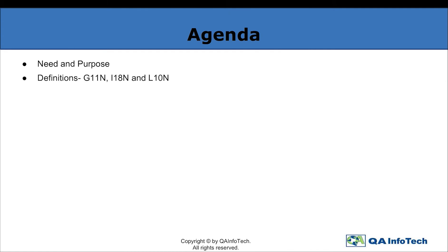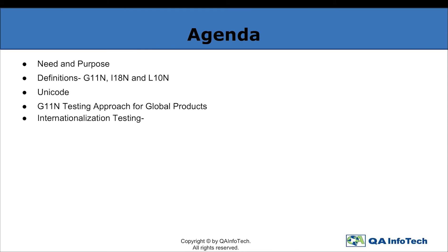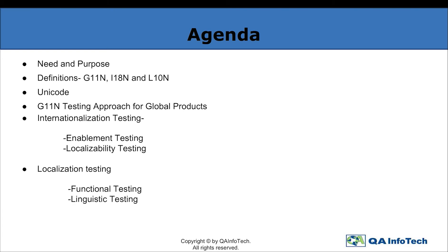the definitions of G11N, I18N, and L10N, understanding Unicode, the G11N testing approach for global products, internationalization testing — which will cover enablement testing and localizability testing — and finally, localization testing, which will cover functional testing and linguistic testing of a product.